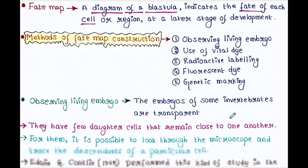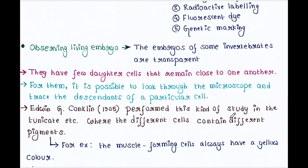First is observing living embryo. The embryos of some invertebrates are transparent and have few daughter cells that remain close to one another. For them, it is possible to look through the microscope and trace the descendants of a particular cell. Edwin G. Conklin in 1905 performed this kind of study in the tunicate, where the different cells contain different pigments.